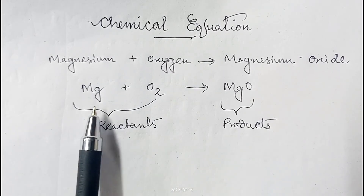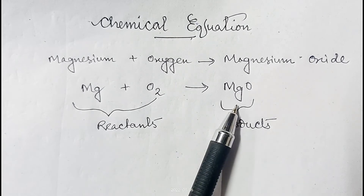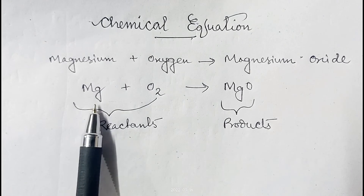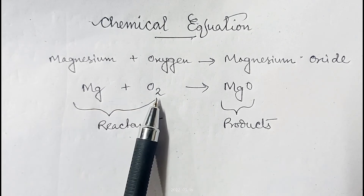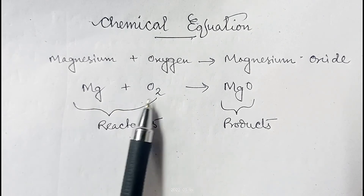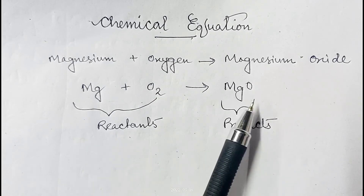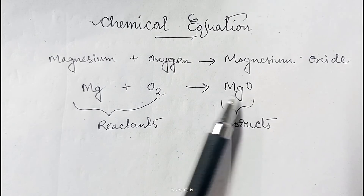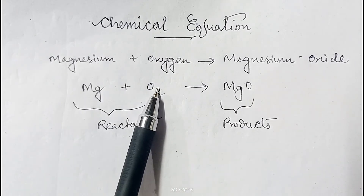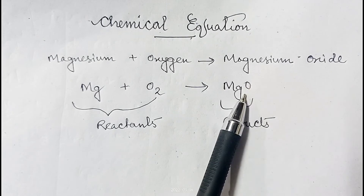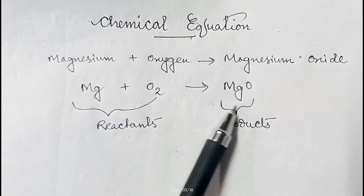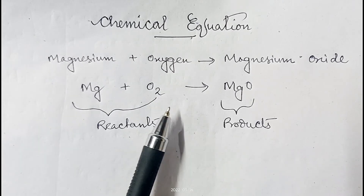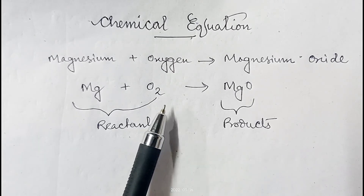If you observe, the number of magnesium atoms on the reactant side and the product side are both the same — one atom each. But for oxygen, the reactant side has two atoms whereas the product side has only one. So the number of atoms on both sides are not the same, and this violates the law of conservation of mass.